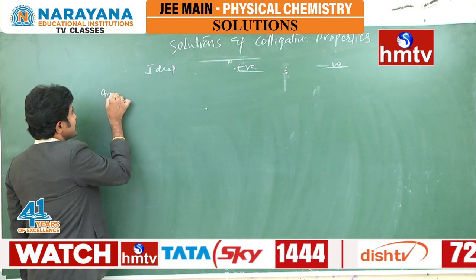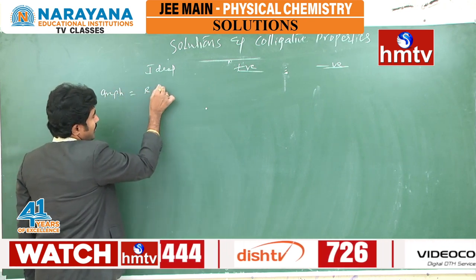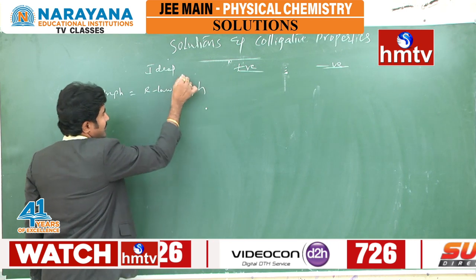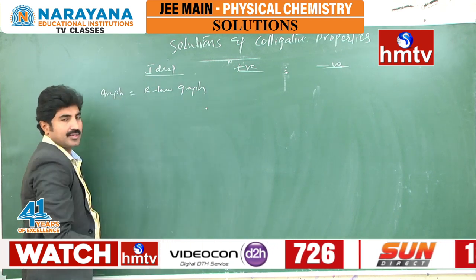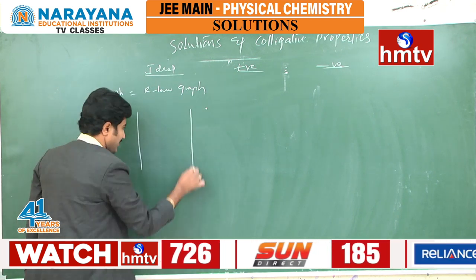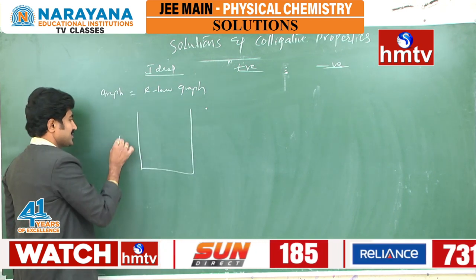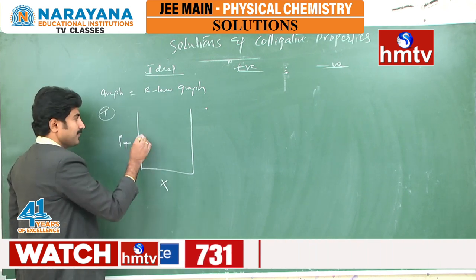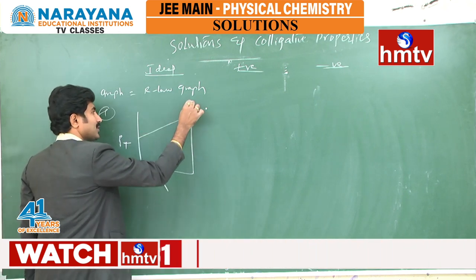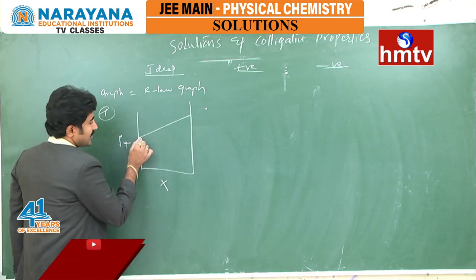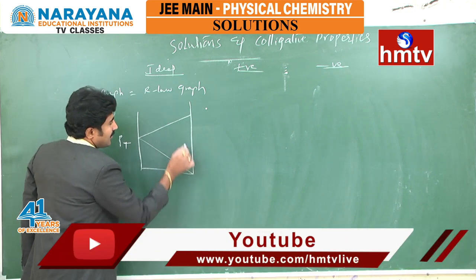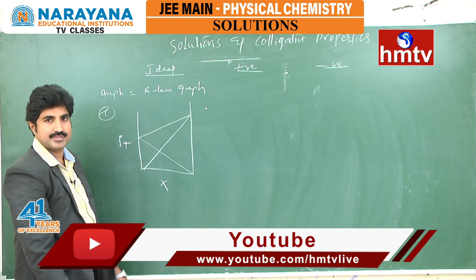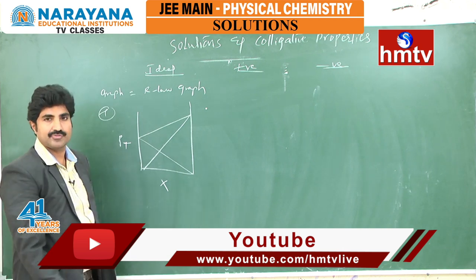This graph is the same as that of Raoult's law graph, which we have already discussed. This is the P total versus mole fraction graph at a constant temperature — it is a total pressure line, along with the partial pressure lines of two liquids.